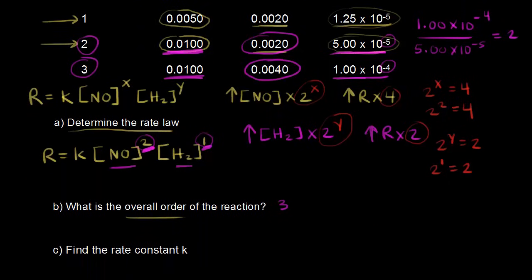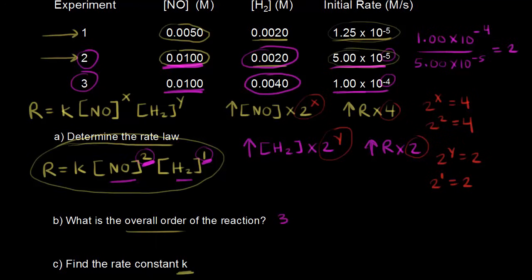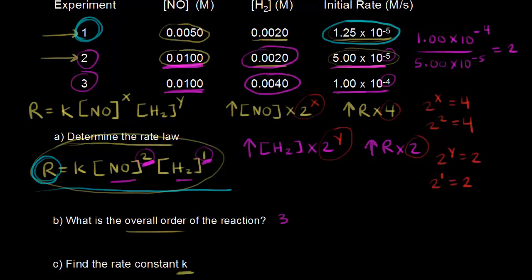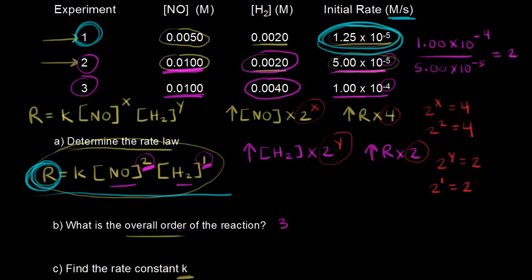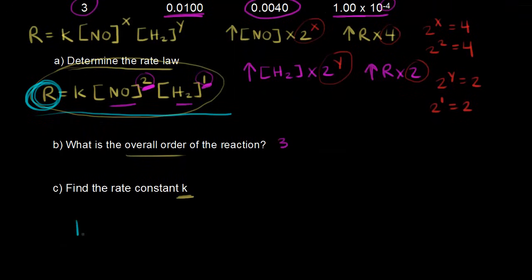In part C, we need to calculate the rate constant K. We use the rate law from part A and plug in values from one experiment — I'll choose experiment one. The initial rate for experiment one is 1.25×10⁻⁵ molar per second, so we plug that into our rate law: 1.25×10⁻⁵ M/s = K × [NO]² × [H₂].